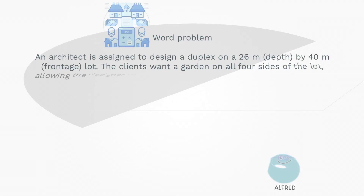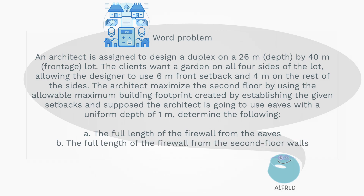Here is the word problem we prepared for you. An architect is assigned to design a duplex on a 26-meter depth by 40-meter frontage lot. The clients want a garden on all four sides of the lot, allowing the designer to use a six-meter front setback and four meters on the rest of the sides. The architect maximizes the second floor by using the allowable maximum building footprint created by establishing the given setbacks, and suppose the architect is going to use eaves with a uniform depth of one meter. Determine the following.